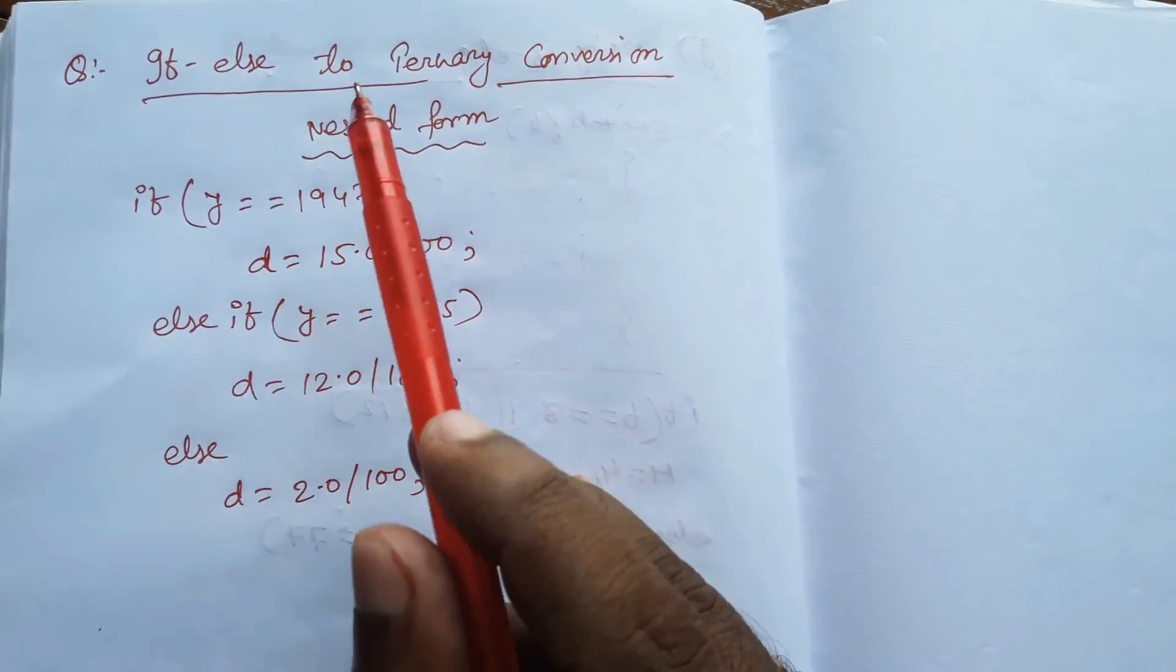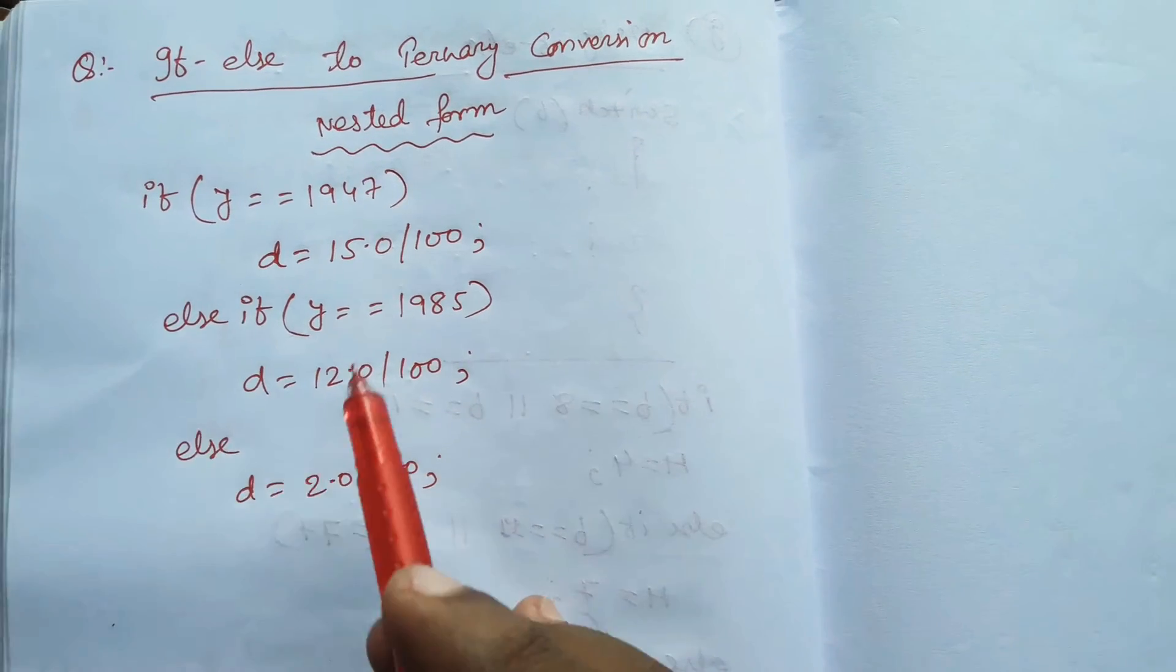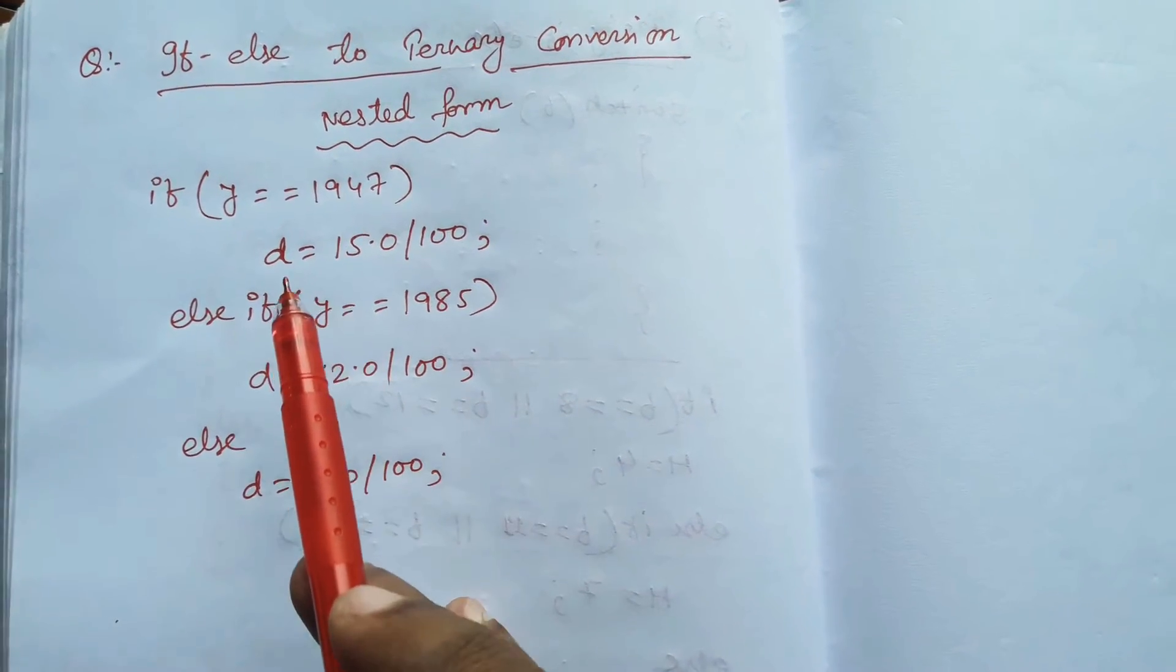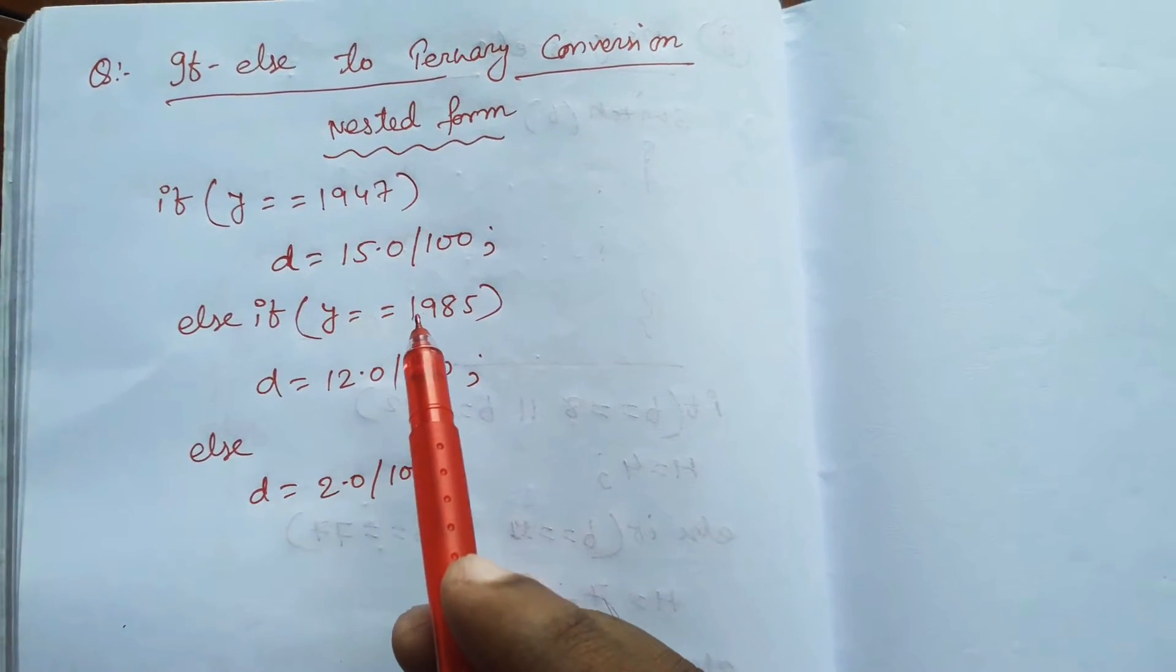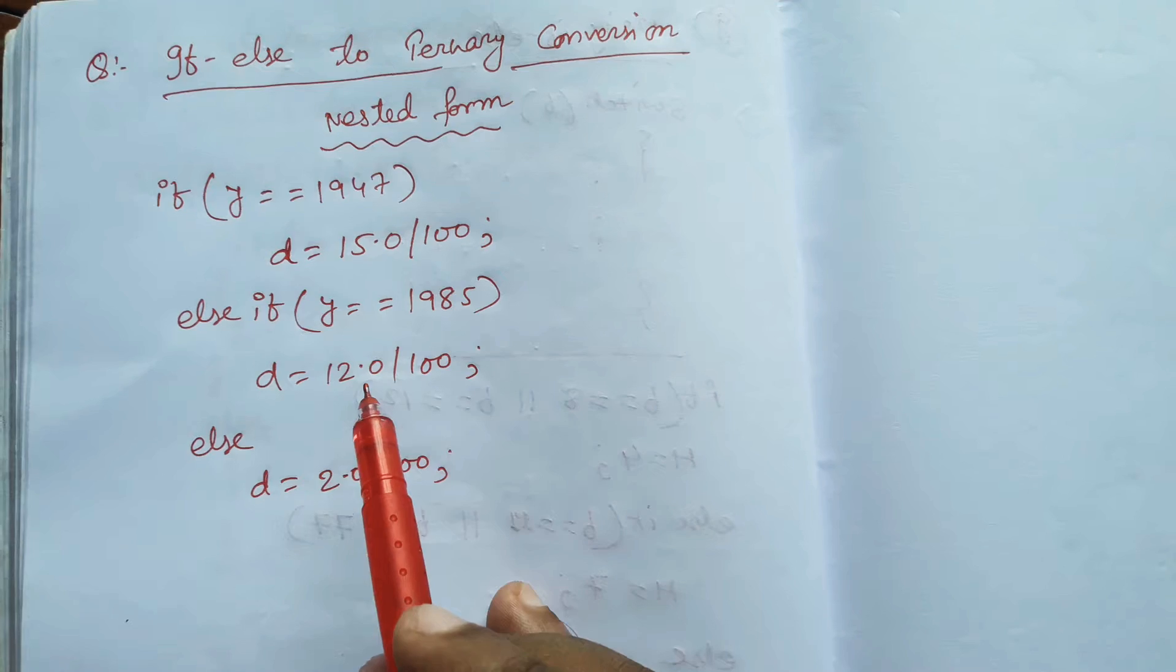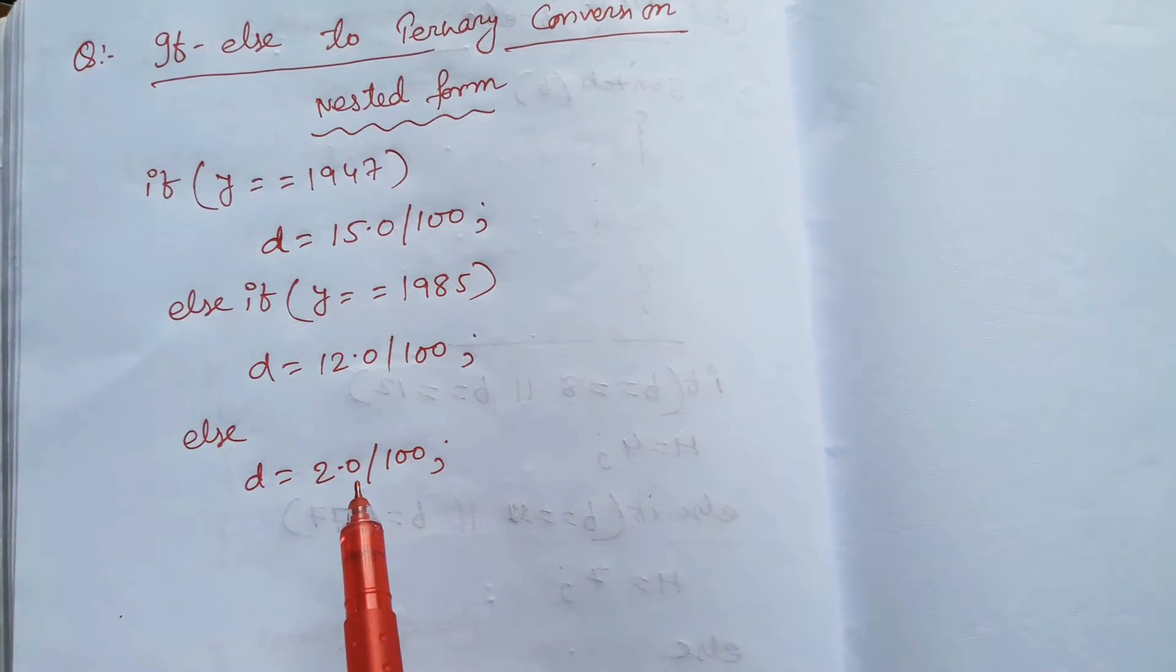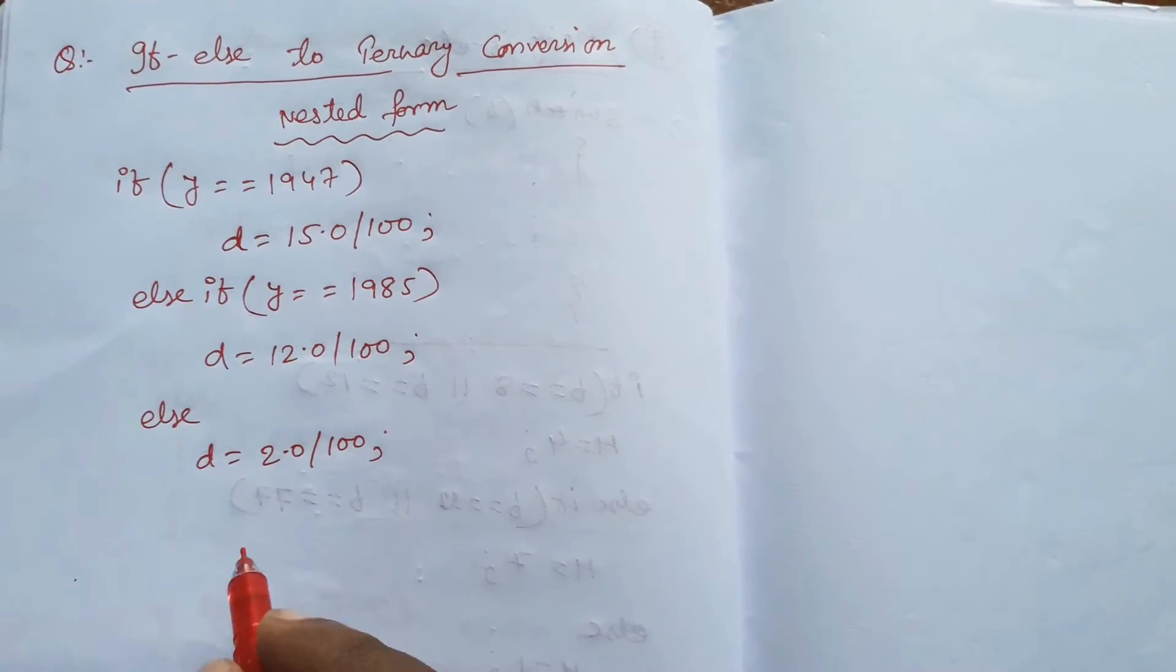Now our topic is if-else to ternary conversion for nested conditions. Suppose we have a nested if-else: if y equals 1947, then d equals 15.0 by 100, else if y equals 1985, d equals 12.0 by 100, else d equals 2.0 by 100. So how will we convert this into ternary operation? Let's see.